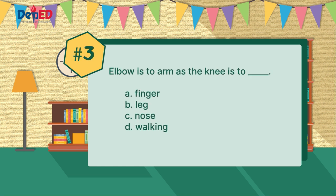And now for number three: elbow is to arm as knee is to blank. Is it letter A, finger? Or letter B, leg? Could it be letter C, nose? Or maybe letter D, walking? Is your answer letter B? Yes, you got it! Knee is to leg.